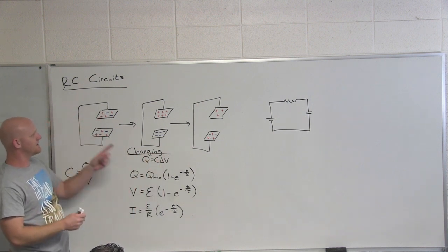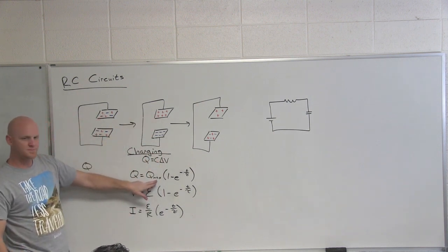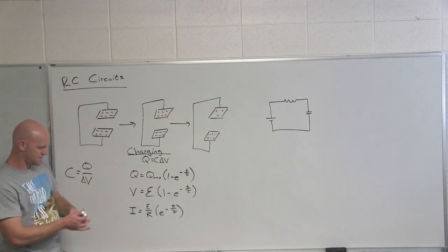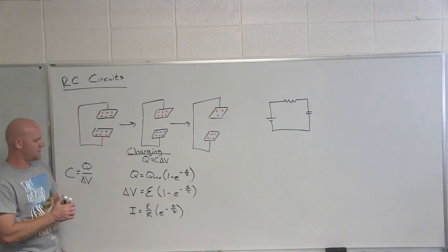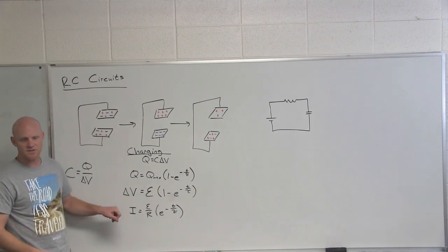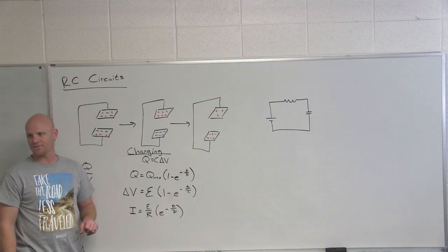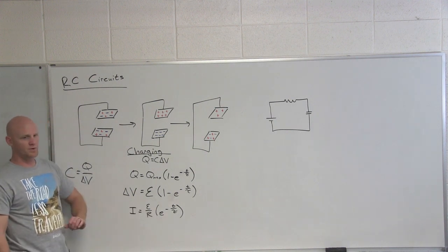So again, as we go from uncharged plates to charge plates, the charge buildup, the charge is going to grow, your potential difference across the two is going to grow, and maybe we call this delta V. But your current that flows through the circuit is going to exponentially decay down to nothing. And so once this is fully charged, no current is flowing in the circuit whatsoever.